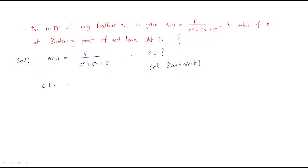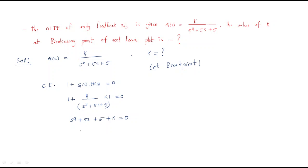The first step is to form the characteristic equation: 1 + G(s)H(s) = 0. Since G(s) = k / (s² + 5s + 5) and H(s) = 1, this gives s² + 5s + 5 + k = 0. Writing k as a function of s: k = -(s² + 5s + 5).